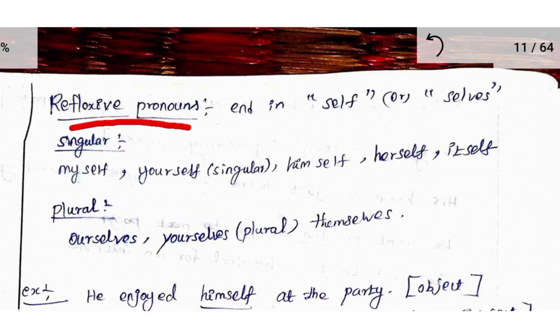Reflexive pronouns end in self or selves. For singular, we use self. For plural, we use selves.